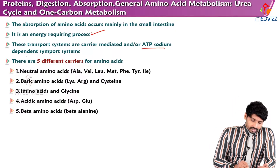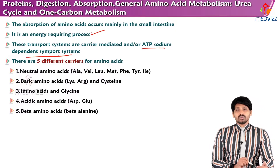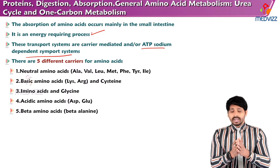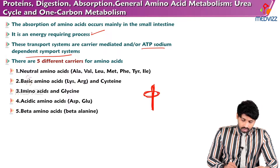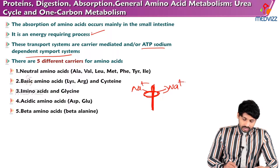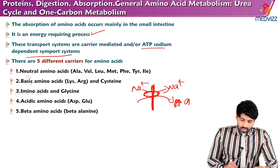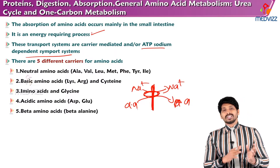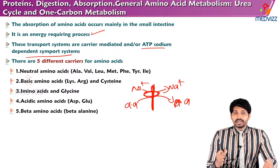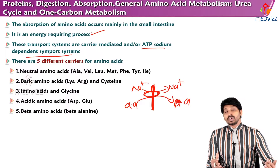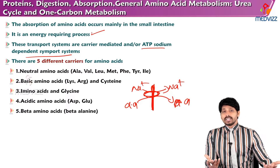The absorption of amino acids is ATP and sodium dependent. There is a symport mechanism where sodium going inside the intestinal cell carries the amino acid along with it — this is called the symport mechanism. There are five different transport mechanisms or five different carriers for different amino acids, because there are 20 amino acids that exist.